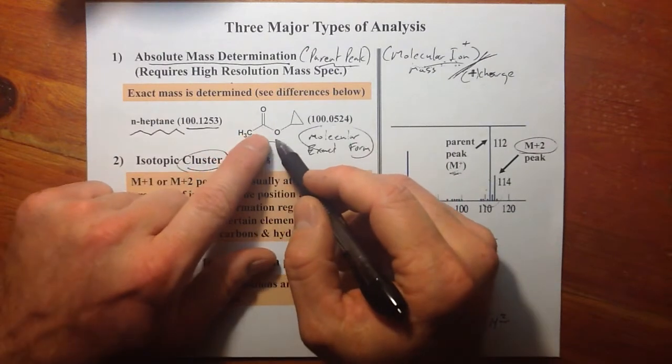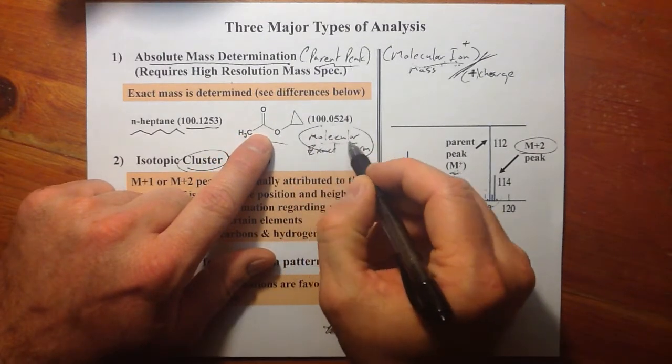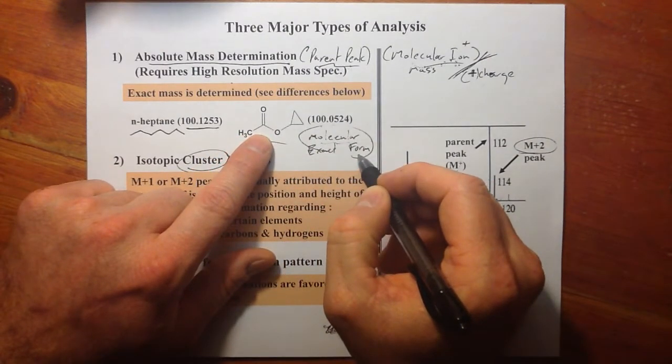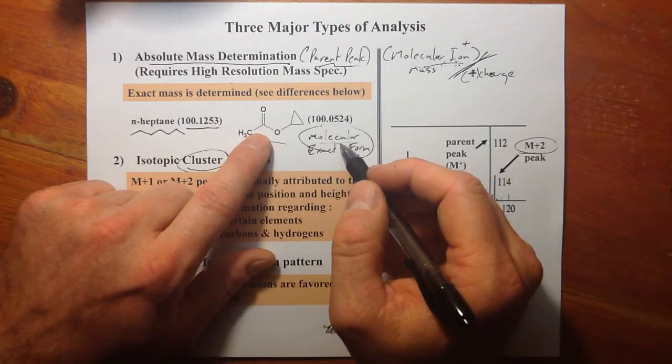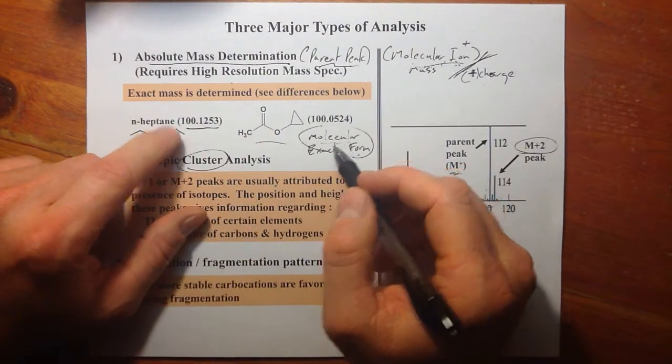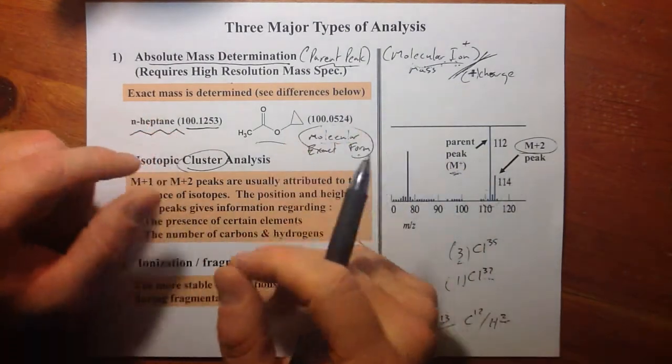So we can do what's called absolute mass determination. The instrument doesn't tell us it's this molecule, but it gives us the exact molecular formula. The exact molecular formula for this would not match the exact molecular formula for this. So we can start to narrow things down.